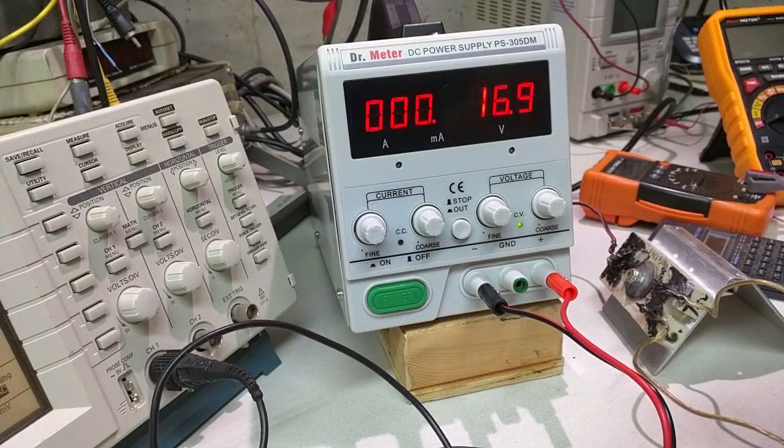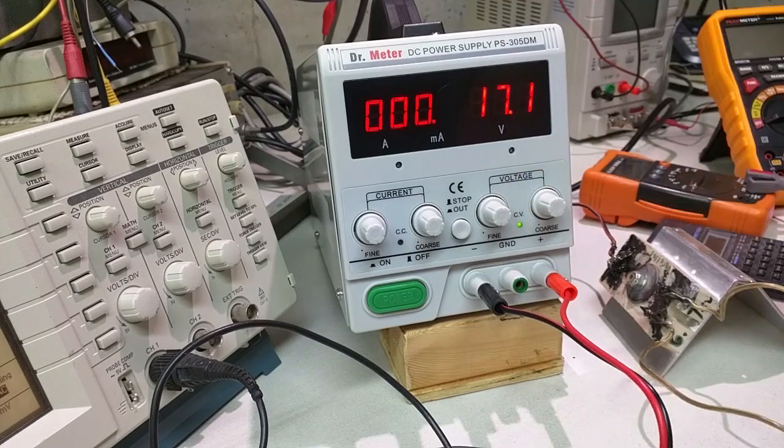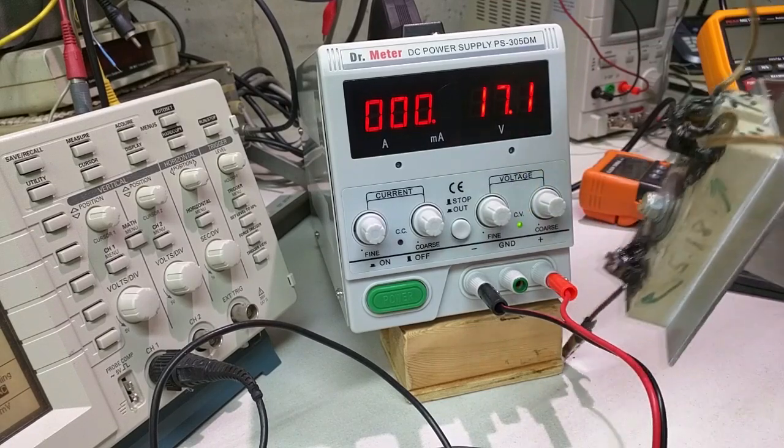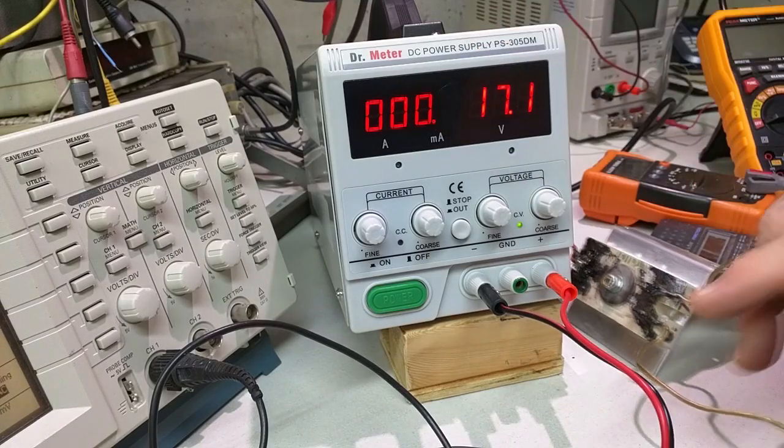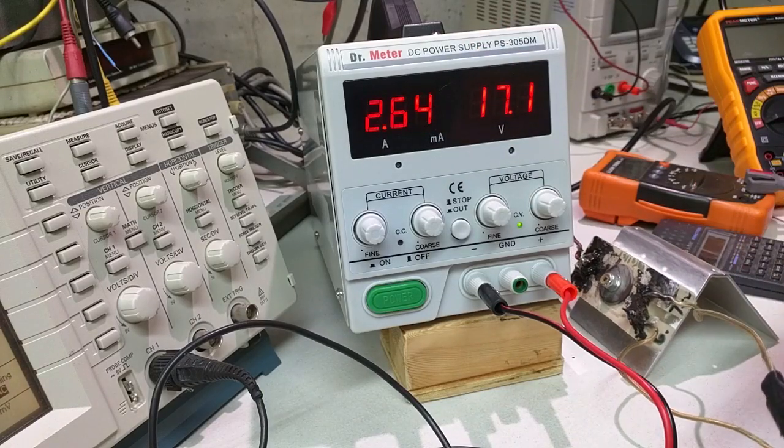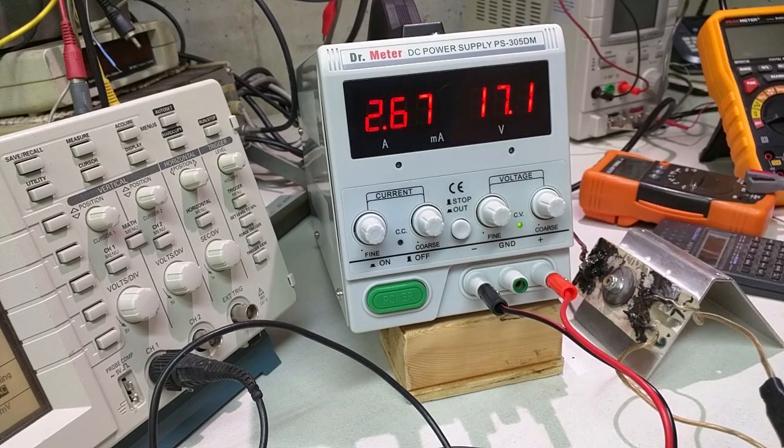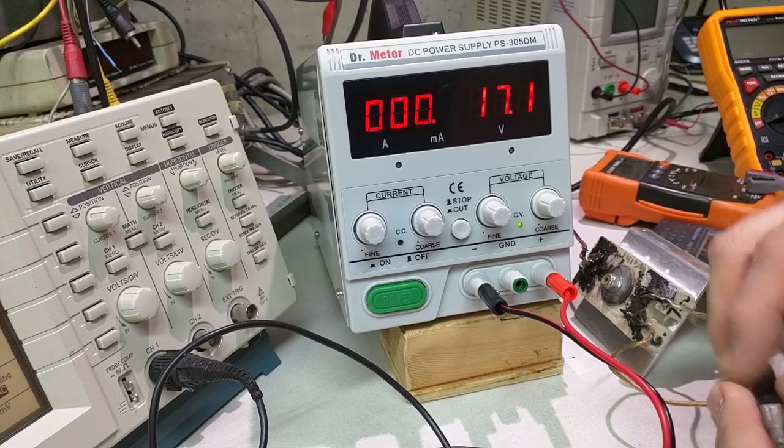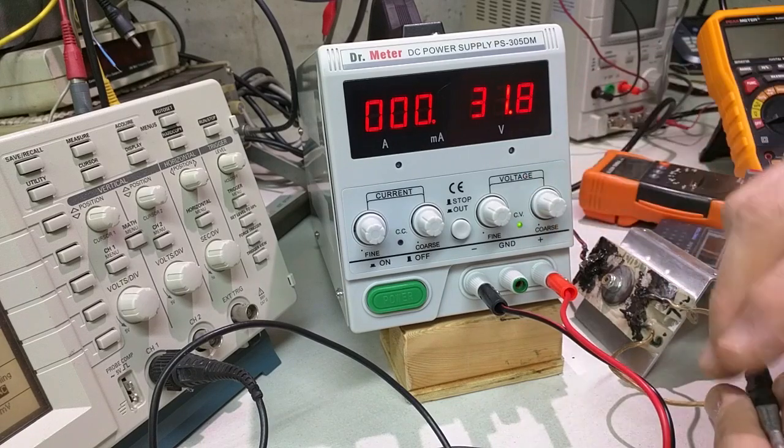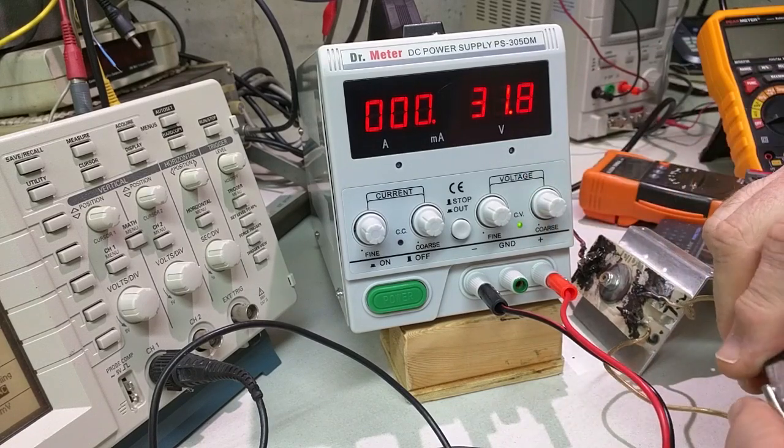Now we're going to show the regulation. We're going to put this load resistor on and off the supply. And we're going to see when the current jumps up what happens to the voltage. So there's 2.66 amps, 17.1 volts. Let's remove the load and let's increase that. Now we're at the highest level, 31.8.